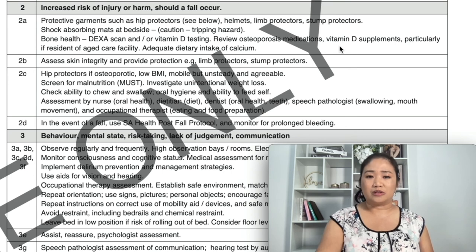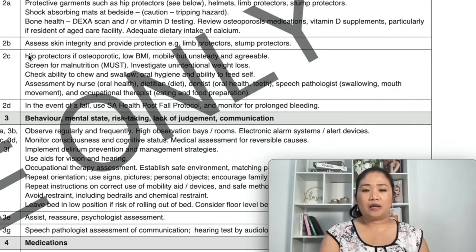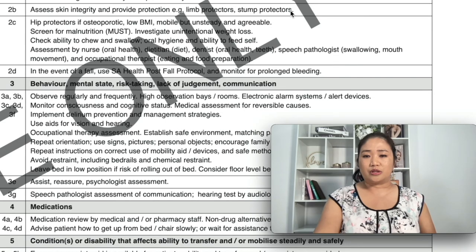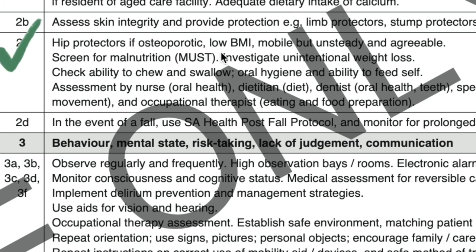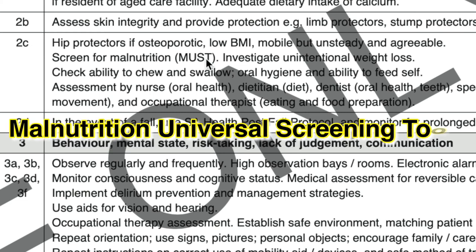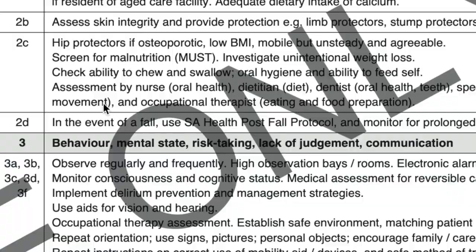For point 2B — if your patient has frail skin or an amputation stump and you circle yes — assess skin integrity and provide protection such as limb protectors and stump protectors. For low BMI, the recommended actions include hip protectors if the patient is osteoporotic, has low BMI, is mobile but unsteady, and is agreeable. Screen for malnutrition using MUST (Malnutrition Universal Screening Tool), a five-step screening tool used to identify malnourished patients. Also investigate unintentional weight loss, which is when the patient has lost weight without trying to, potentially due to an underlying cause.